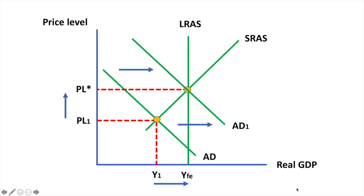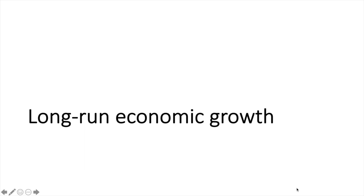If you wanted to demonstrate short-run economic growth on the aggregate demand and aggregate supply diagram, you can show it like this. There is an increase in aggregate demand and real GDP rises from Y1 to YFE. Notice that the long-run aggregate supply curve did not shift — only aggregate demand did.